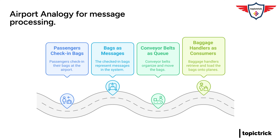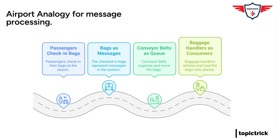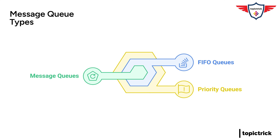Are there different types of message queues? There are definitely different types — just like you wouldn't use a hammer to screw in a light bulb, different types of message queues are better suited for different tasks. One of the most common is called a FIFO queue, which stands for first in, first out. In a FIFO queue, the messages are processed in the exact order they arrive. No cutting in line.